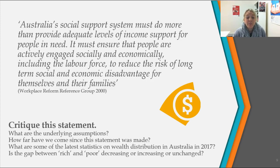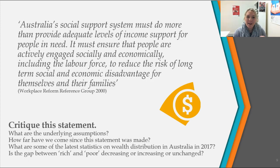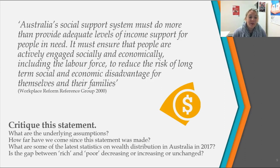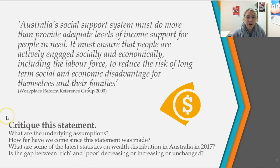What are some of the latest statistics on wealth distribution in Australia in 2017? I know that it is 3% of people in this country who have most of the wealth, and there continues to be a huge gap between the poor and the most wealthy. Is the gap between rich and poor decreasing or increasing? The relevant literature says it is continuing to increase.